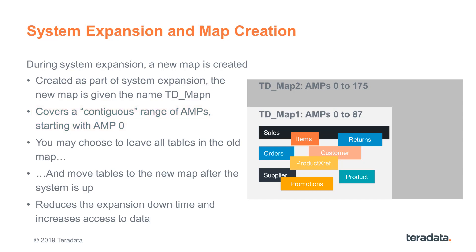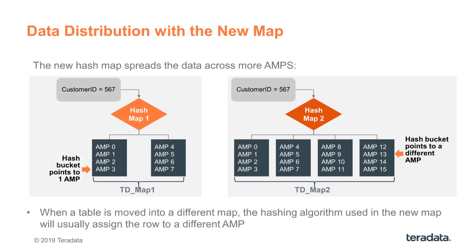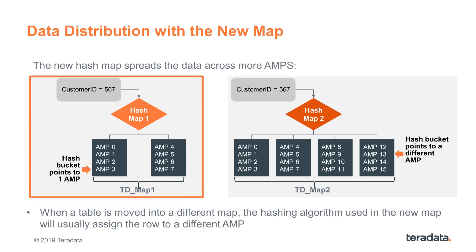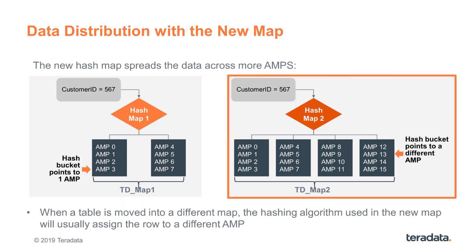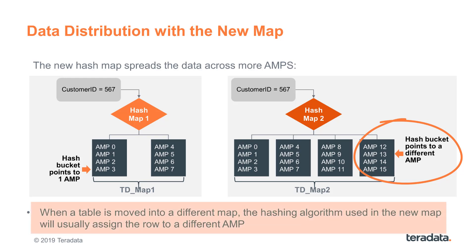This capability of leaving the tables in the previous hash map after you've expanded a system is an important way of reducing the downtime during system expansion. When you move a table from one hash map to another, the rows are actually placed on different AMPs because that second hash map uses a different number of AMPs. So the same primary index value will now result in a hash map lookup that points it to a different AMP. You can expect your rows to reside on different AMPs when you move a table from one contiguous hash map to another.